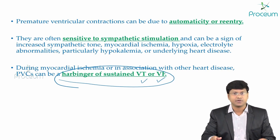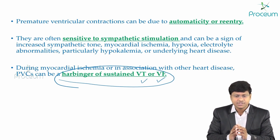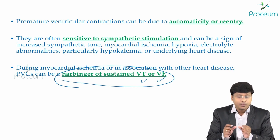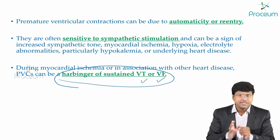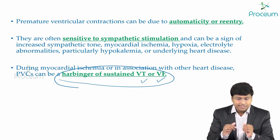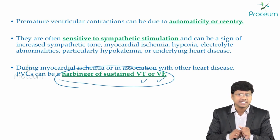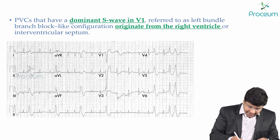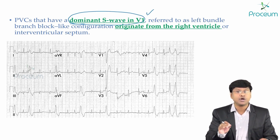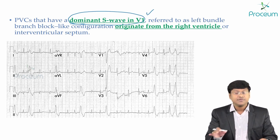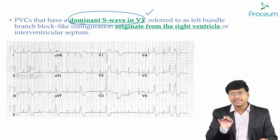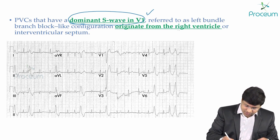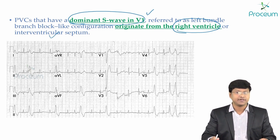An important ECG question is: how do you determine whether a PVC originated from the right ventricle or the left ventricle? If the premature ventricular complex has a dominant S wave in V1 — that is, an LBBB morphology — then the ectopic impulse has originated from the right ventricle or the interventricular septum.